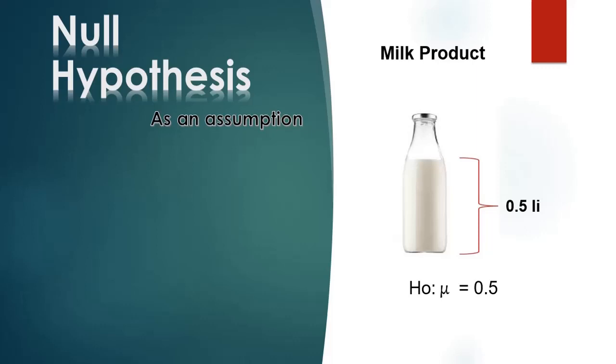The alternative hypothesis is the opposite method. The alternative hypothesis is μ not equal to 0.5 liter, which indicates either overfill or underfill.